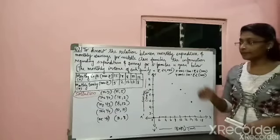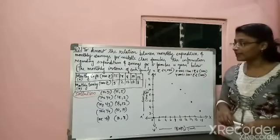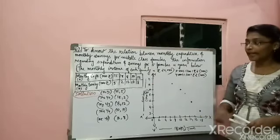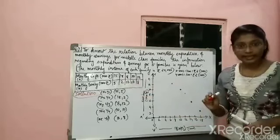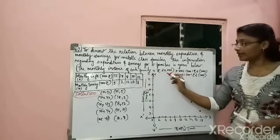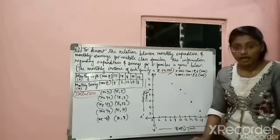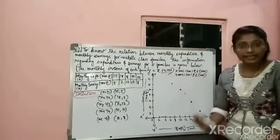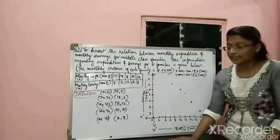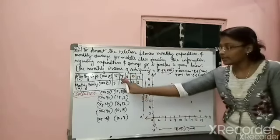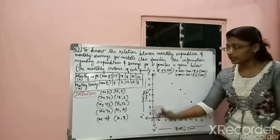Now another example: to know the relation between monthly expenditure and monthly savings for middle-class families. Information for 5 families is given, and the monthly income of each family is rupees 20,000 — the same for all families, making it easy to compute and analyze. The two variables are monthly expenditure as X and monthly savings as Y, both given in thousands. Expenditure values are 15,000; 18,000; 8,000 and so on. Savings values are 5,000; 2,000; 12,000; 8,000; 10,000.